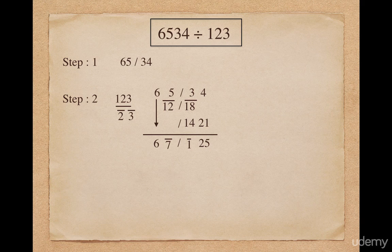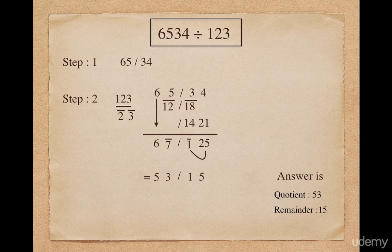Here I am getting a vinculum number in the final answer. To overcome this situation, I convert the vinculum number to a normal number. So 67-bar will be converted to 53, and I get the final remainder as 15. So the final answer will be 53 as the quotient and 15 as the remainder.